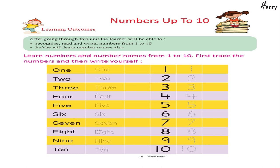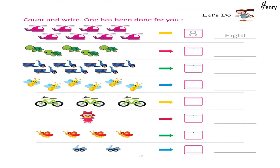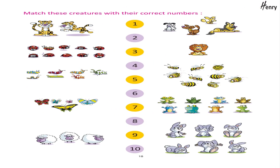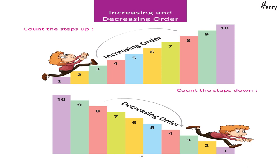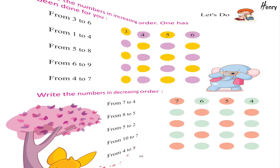Eight, nine, ten. Let's do: count and write — one has been done for you. Match these creatures with their correct numbers. Increasing and decreasing order: count the steps up — increasing order: one, two, three, four, five, six, seven, eight, nine, ten. Count the steps down — decreasing order: ten, nine, eight, seven, six, five, four, three, two, one.